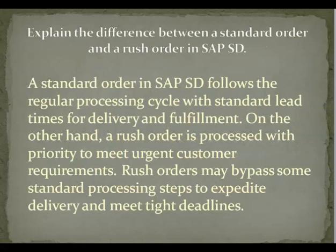What is the difference between a standard order and a rush order in SAP S.D.? Answer: A standard order in SAP S.D. follows the regular processing cycle with standard lead times for delivery and fulfillment. On the other hand, a rush order is processed with priority to meet urgent customer requirements. Rush orders may bypass some standard processing steps to expedite delivery and meet tight deadlines.